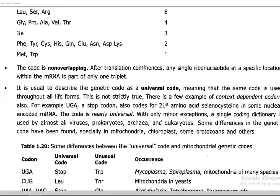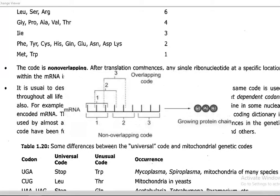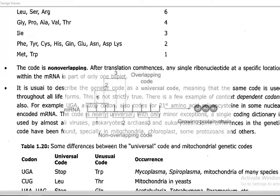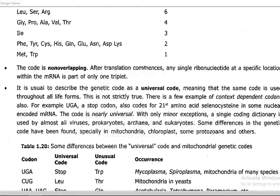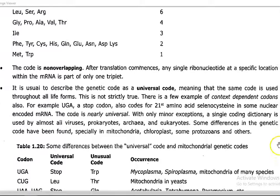The next point concerns the nature of the code: the genetic code is non-overlapping. That is, at the time of translation, the genetic code is read as a non-overlapping code.